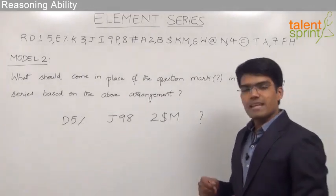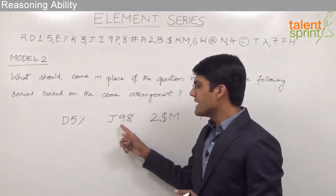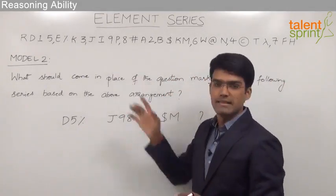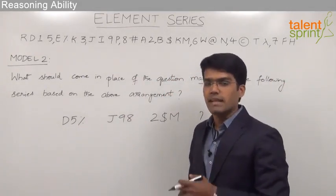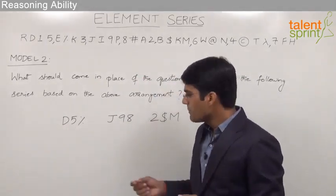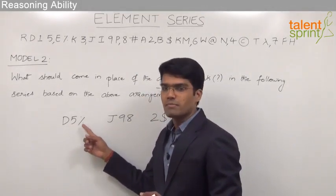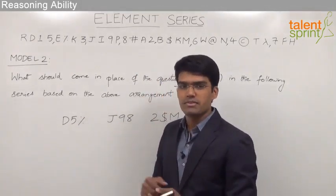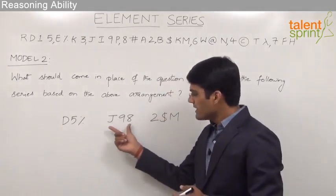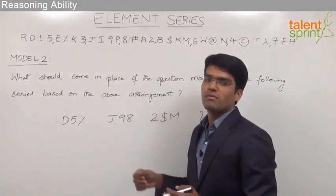To solve these types of questions, understand that the logic between these elements is only based on their positions in the given element series and there is no other relationship between these elements. For example, there is no relationship between D, 5, or percentage other than their positions. Similarly, there is no relationship between one set of elements and the next set, other than the positions of these elements.